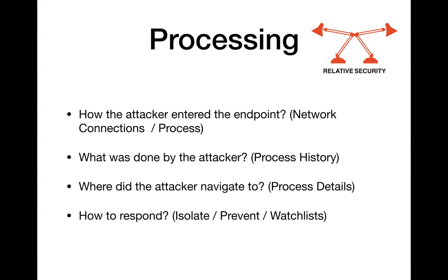You can track where the attacker navigated using all process details. To respond, you can create a watchlist — if you spot a suspicious process on one endpoint, you set an alert so that if the same process runs anywhere else in your network you are immediately notified. You can also set a prevention response to stop it right away if it executes on another endpoint. If the threat is moving laterally, you can configure the system to automatically isolate the endpoint machine to stop it and remediate — all without manual intervention.